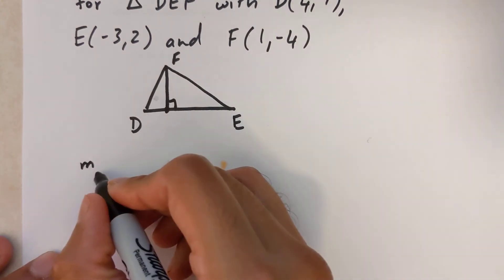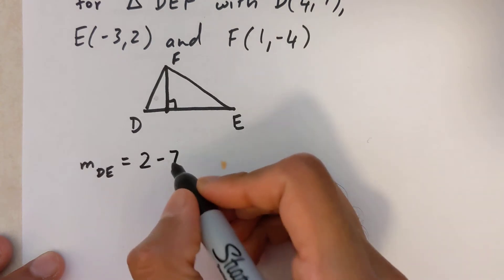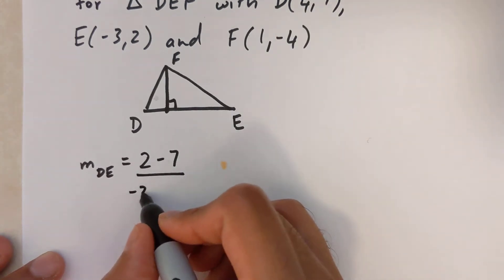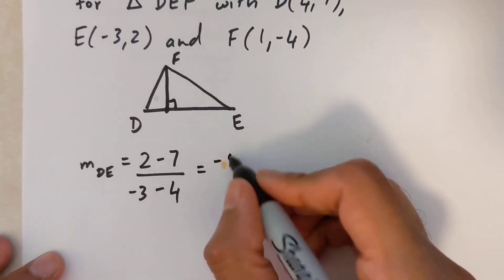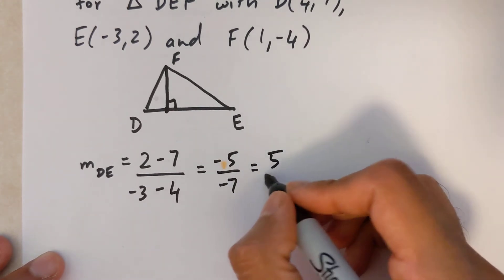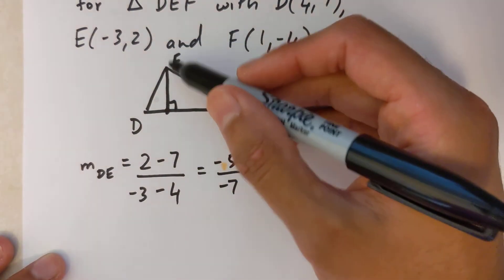So I'll do that down here. Slope of DE, that's going to be Y2 minus Y1 over X2 minus X1. That is negative 5 over negative 7, and if I simplify that, that's 5 over 7. Now I'm going to find the equation of this line here.